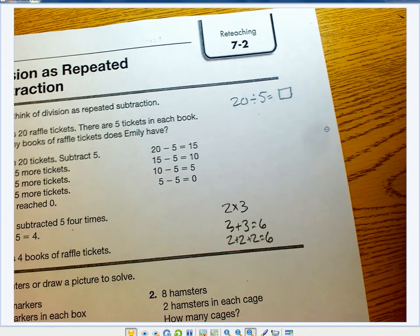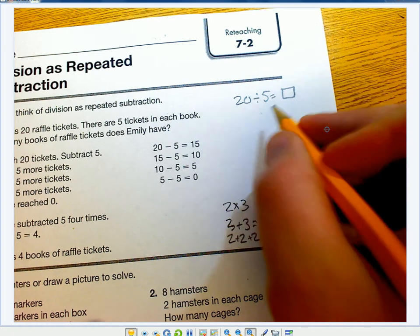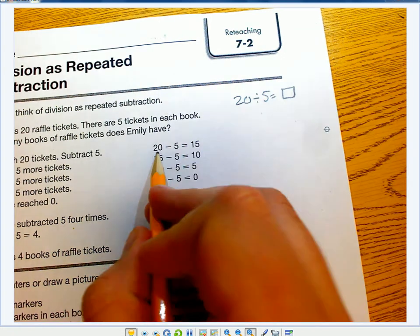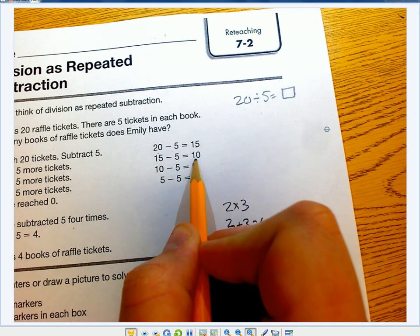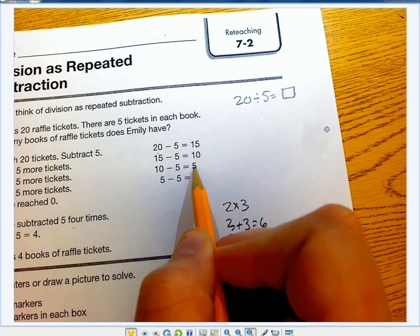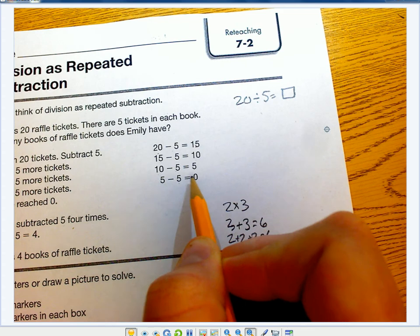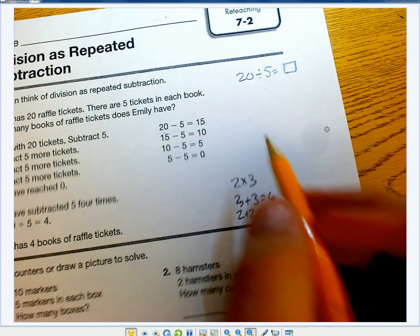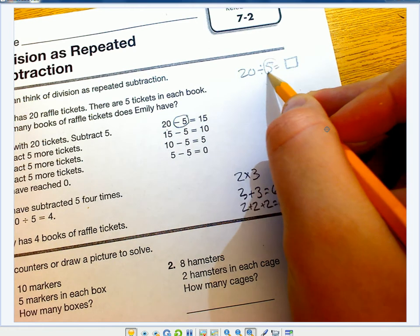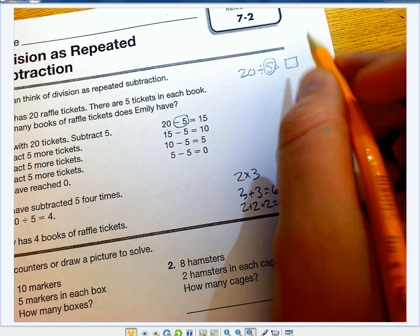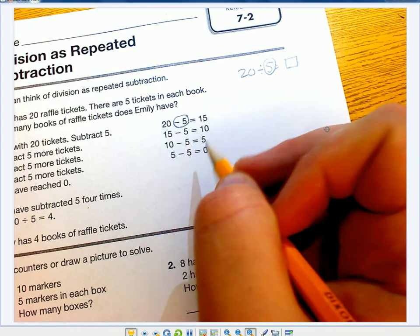For 20 divided by 5, I'm going to subtract 5 until I get to 0. So you can see here: 20 minus 5 is 15, 15 minus 5 equals 10, 10 minus 5 equals 5, and 5 minus 5 equals 0. The number you're subtracting is always this first number, and the answer is how many times you had to do it to get to 0.